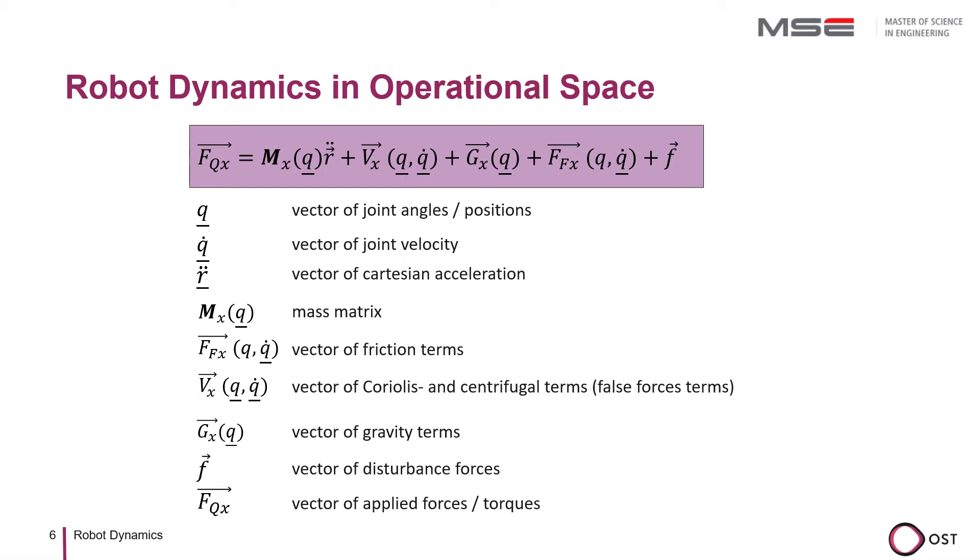The parameters of the terms are usually not made dependent on the Cartesian position velocities, but on the values in generalized robot coordinates. This representation is very valuable when you want to control in the operational space.